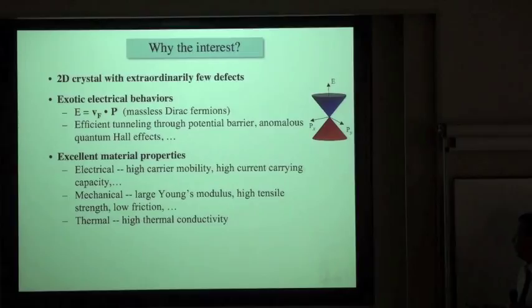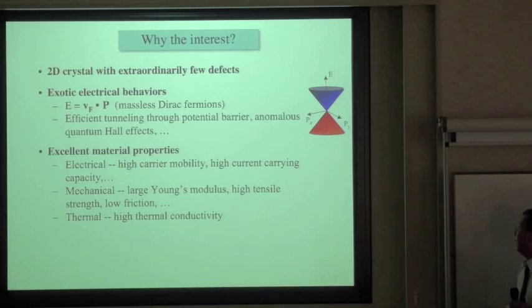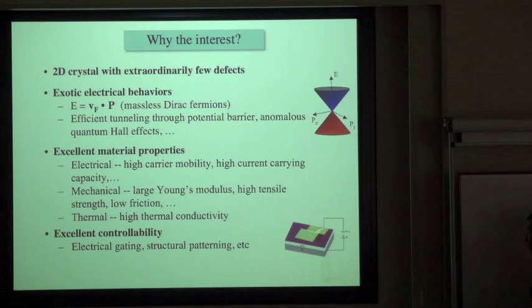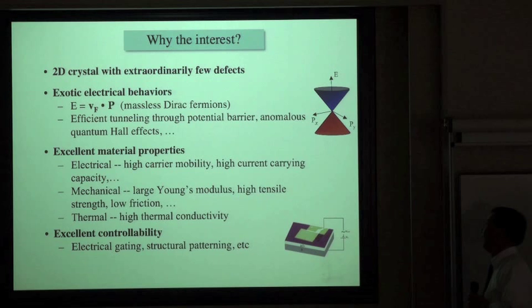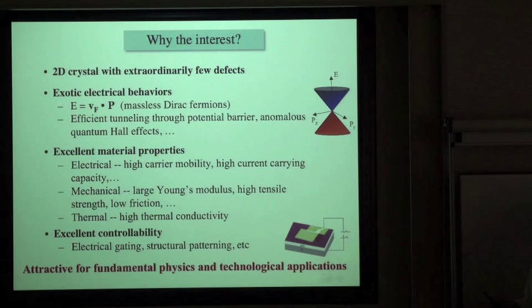Thermally, graphene is one of the best thermal conductors, second only to diamond. What's even more exciting is that graphene has excellent controllability — one could tune the properties of graphene by electrical gating or structural patterning. Graphene is therefore very attractive for fundamental physics studies and also for possible technological applications.